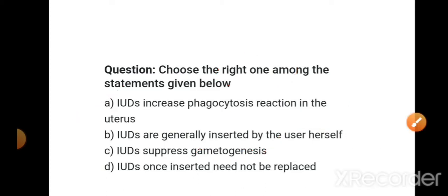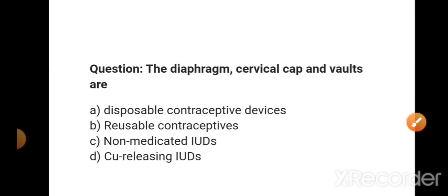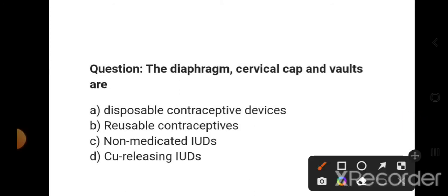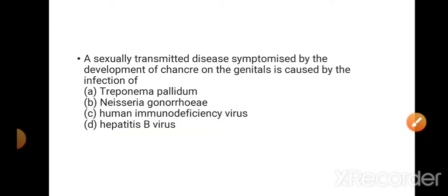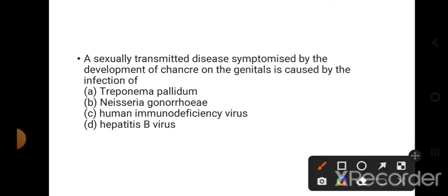So this is the right statement, option A. The diaphragm, cervical cap, and vault - these are the reusable contraceptives, so this is the right option, option B. The sexually transmitted disease symptomized by the development of canker on the genitals is caused by the infection of syphilis. So this is the right option.